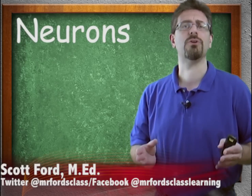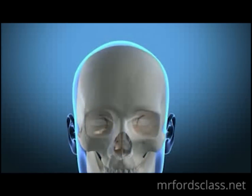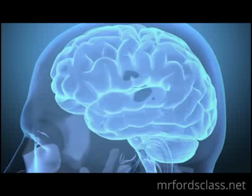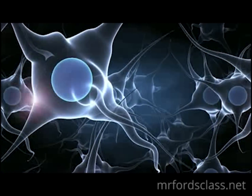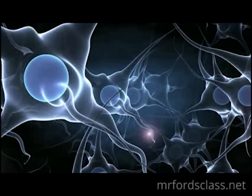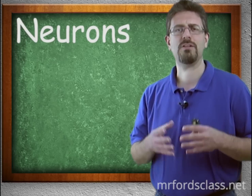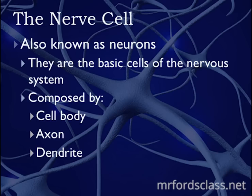The nerve cell, or neuron, is the basic unit of the nervous system. The three general components of a typical neuron are the cell body, the dendrites, and the axons. They always have no more than one axon — maybe even none — and they can have possibly tons of dendrites.